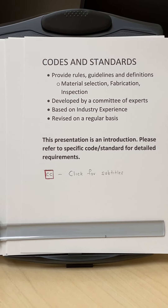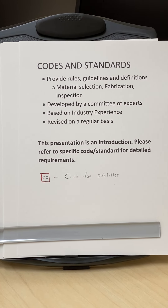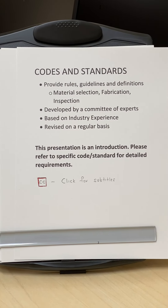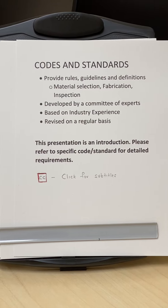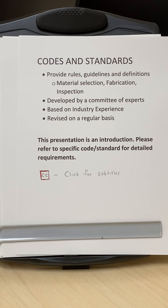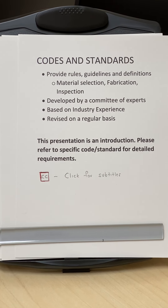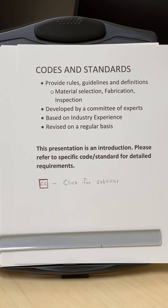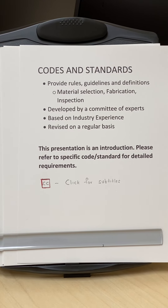Codes and standards provide the rules and guidelines, definitions for material selection, fabrication, as well as inspection. These codes are developed by experts who meet regularly on an annual basis, or maybe twice a year, and review the codes, then update and revise them. This presentation should be taken as an introduction — for specific language, you should refer to the actual code.